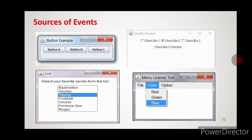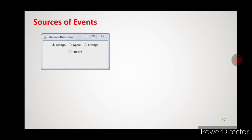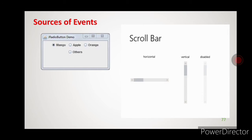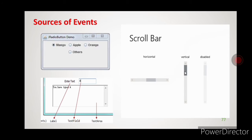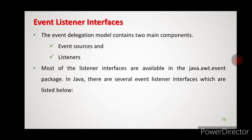Here on screen are some examples. This is the button, these are the checkboxes, this is the list of items, and this is the menu item — under the color menu there are three items available. This is the choice or radio button. These are the scroll bars — this one is horizontal, this is vertical, and this scroll bar is disabled. These are the text components — a text field where you enter characters, and a larger area is the text area. These are all sources of events.